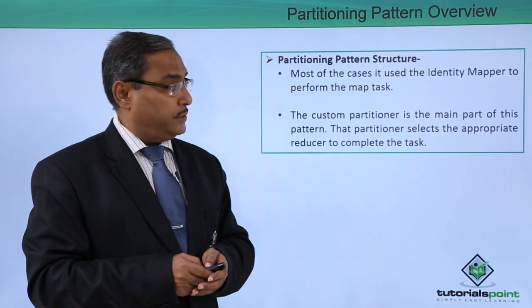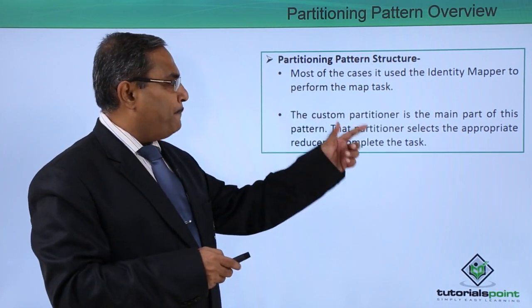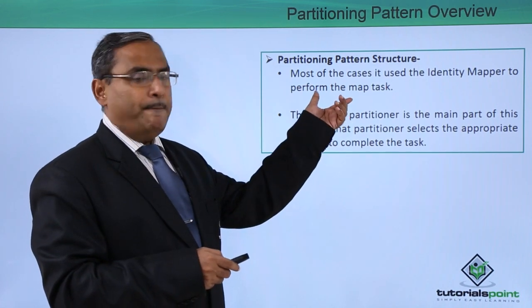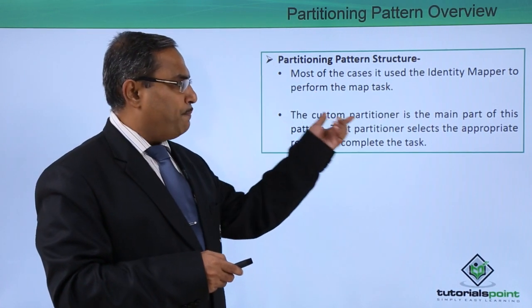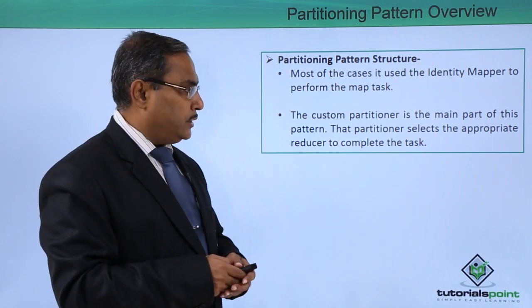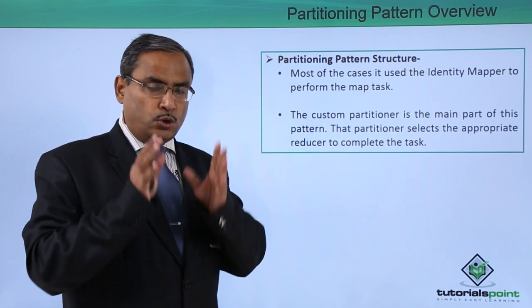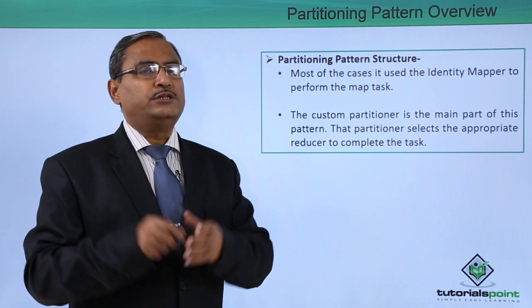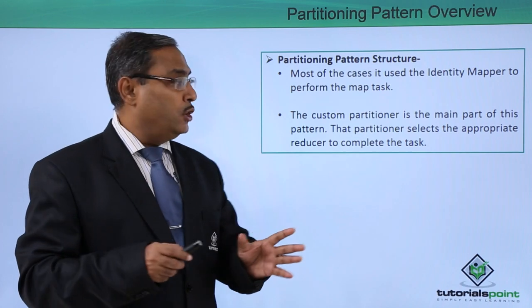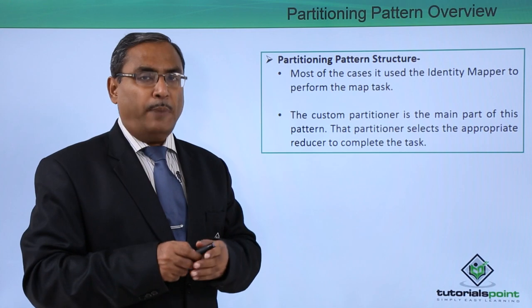Regarding the partitioning pattern structure: in most cases it uses an identity mapper to perform the map task. The mapper is responsible for performing the map task, and the custom partitioner is the main part of this pattern. This partitioner selects the appropriate reducer to complete the task — the partitioner knows which reducer is meant for which kind of task, and accordingly directs the partitioning operation.